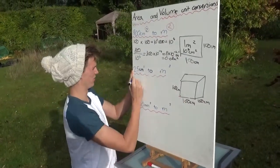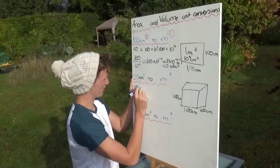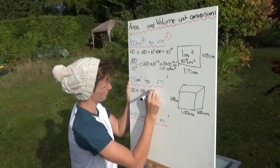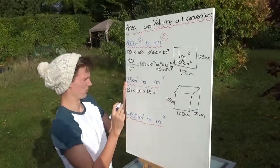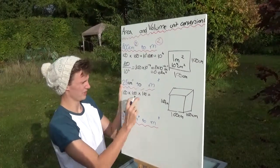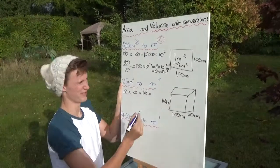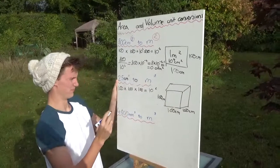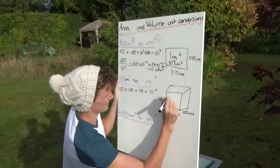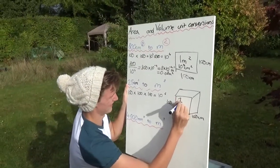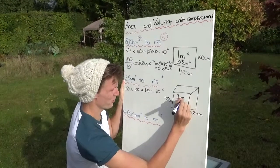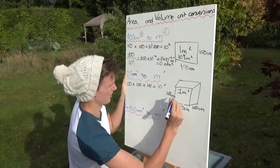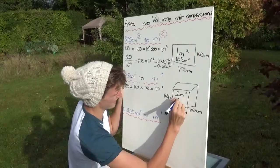So to find the number of centimeters cubed in one meter cubed, we need to do 100 times 100 times 100, which equals, well it's going to be 1 million but I can't fit that in, so I'm going to write 10 to the 6. So 10 to the 6 is 1 million. Would you put that on your diagram please, John? It's one meter cubed or 10 to the 6 centimeters cubed.